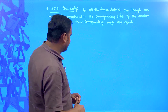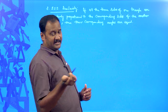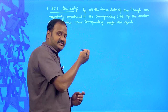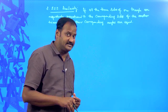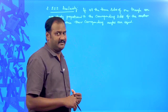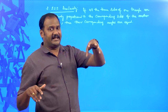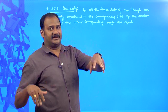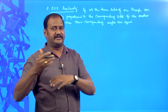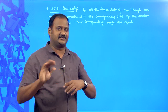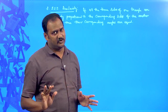Let us try to prove the SSS similarity criterion. Remember, in order to prove this, we can use AAA similarity criterion. This means if you can identify three angles of one triangle respectively equal to three angles of the other triangle, directly we can say that their corresponding sides are proportional.